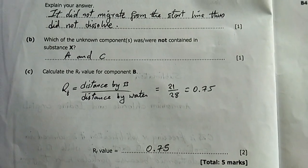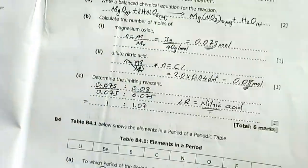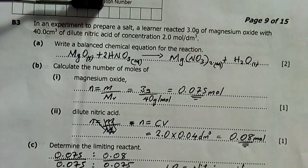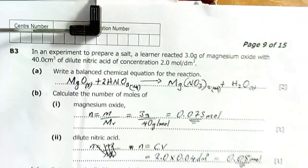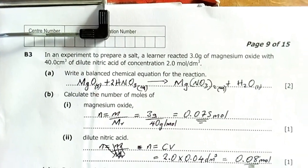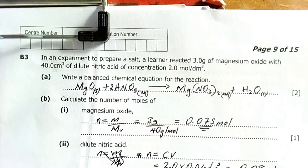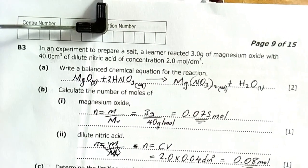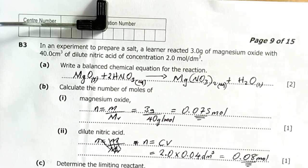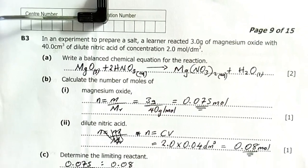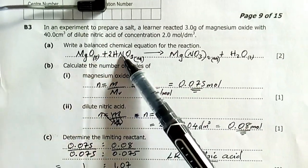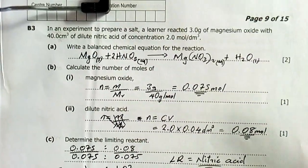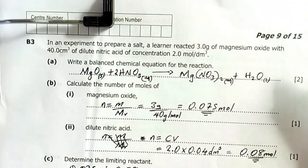Next question B3: In an experiment to prepare a salt, Elena reacted three grams of magnesium oxide with 40 cubic centimeters of dilute nitric acid at concentration two moles per decimeter. Write a balanced chemical equation for the reaction: magnesium oxide plus nitric acid gives magnesium nitrate and water.